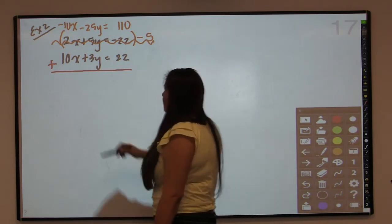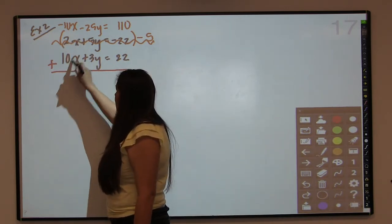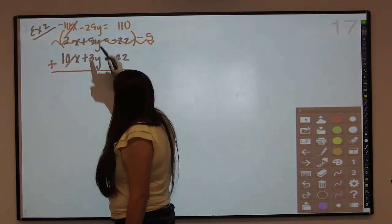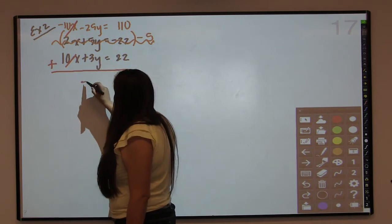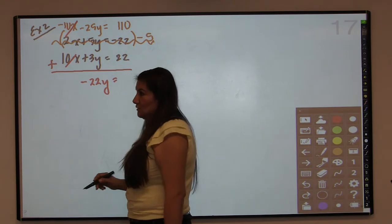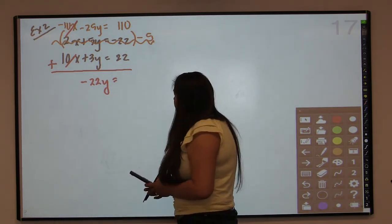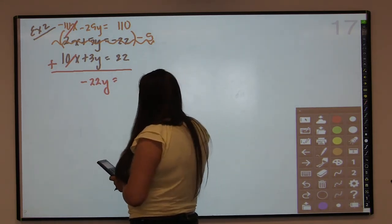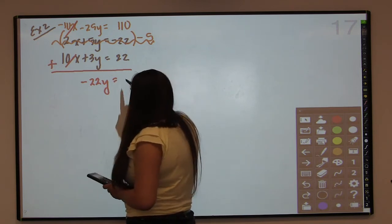And this time when I add, because I have a negative 10x and a positive 10x, they're going to cancel. And then negative 25 plus 3 is going to be negative 22. And then 110 plus 22 is going to give us 132.